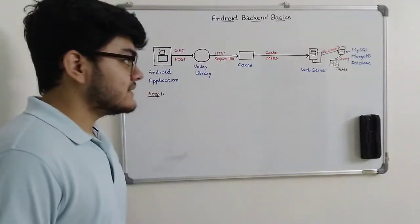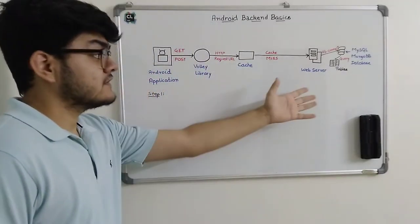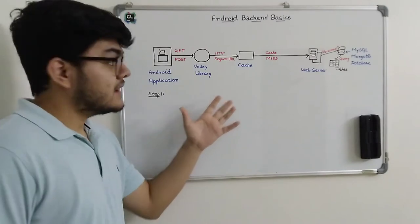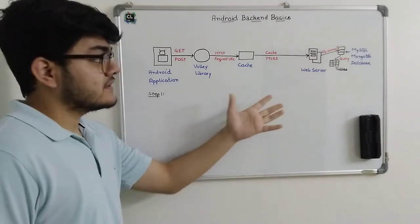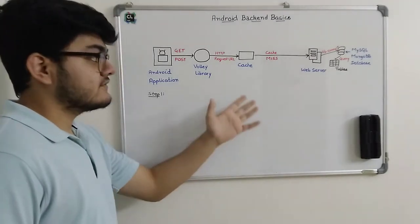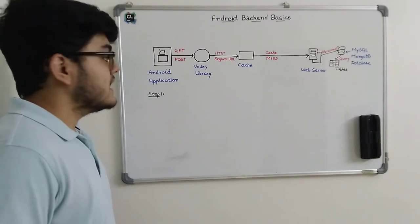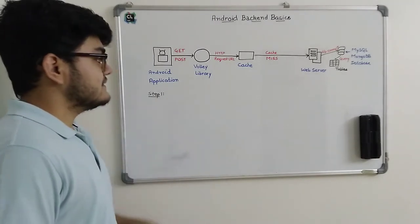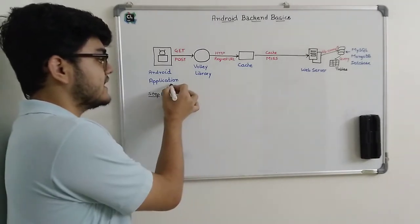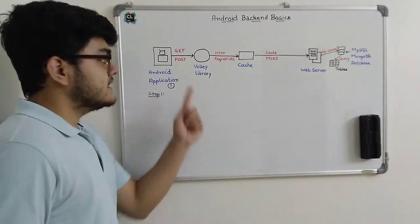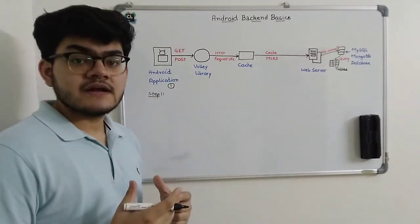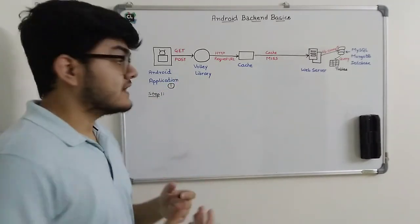The first step involves this whole diagram here. It is a very important diagram, so make sure you draw it somewhere for future reference. The first step contains the Android application that we are going to write. The Android application can generate a GET or a POST request.